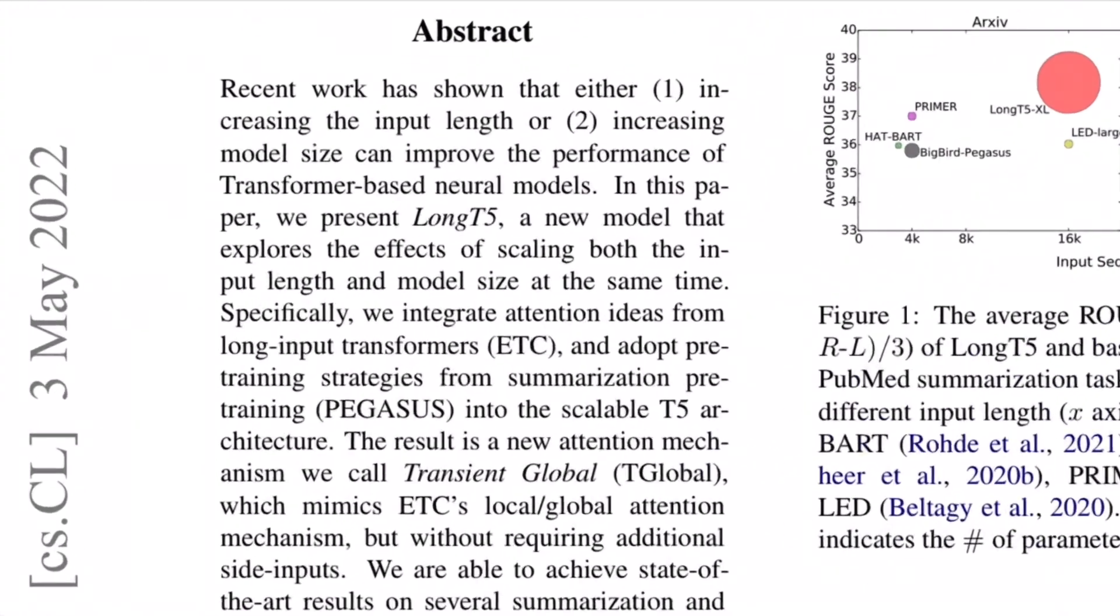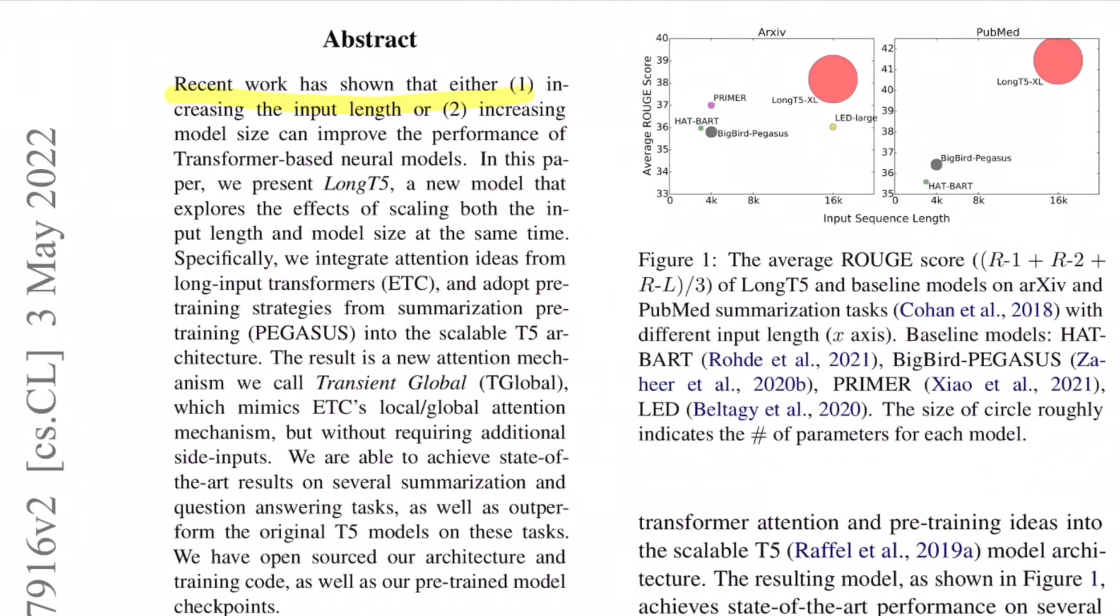So let's move to the abstract. Recent work has shown either increasing the input length or increasing model size can improve the performance of transformer-based neural models. Yeah, correct. Because if you add more capacity to the model, the parameters increase and the chances of it learning things gets better. But totally depends on how much data you're training on because that could easily lead to overfitting. And the second point is about increasing the input length. So yeah, that's also correct. Because if talking about question answering or summarization, the more the context the model is actually able to see at one go, while producing the output, it will be able to attend to all those nuances from the entire text.